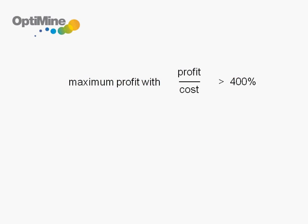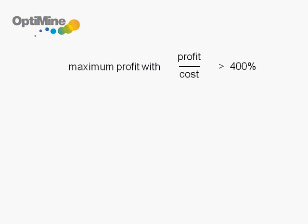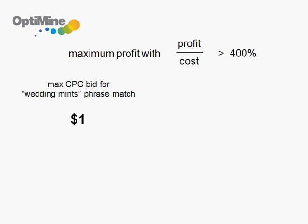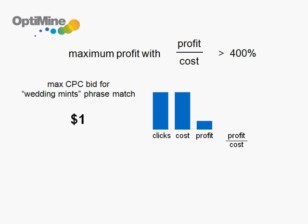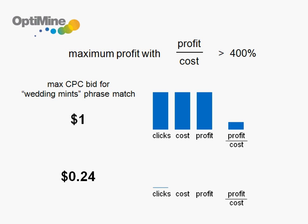Consider an example of how keyword-by-keyword bidding better meets your business goals. If we bid $1 for a keyword, that may generate a lot of clicks, cost, and profit, but low profit over cost. Alternatively, a bid of $0.24 may generate fewer clicks, cost, and profit, but much better profit over cost.